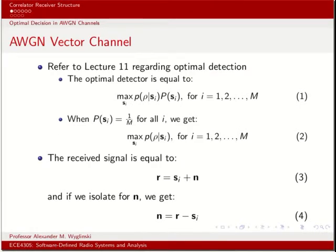Referring to a couple of lectures ago when we talked about optimal detection — both maximum likelihood and maximum a posteriori detectors — we created a framework using signal vector representations in order to come up with a decision rule that would maximize the probability of correct reception. We're going to use that rule in the presence of an AWGN channel to come up with a closed form representation implementable at the receiver for optimally detecting intercepted transmissions influenced by additive white Gaussian noise.